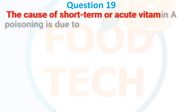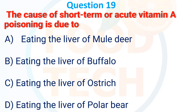Question 19. The cause of short-term acute vitamin A poisoning is due to: A. Eating the liver of mule bear. B. Eating the liver of buffalo. C. Eating the liver of ostrich. D. Eating the liver of polar bear. The correct answer is D: eating the liver of polar bear.